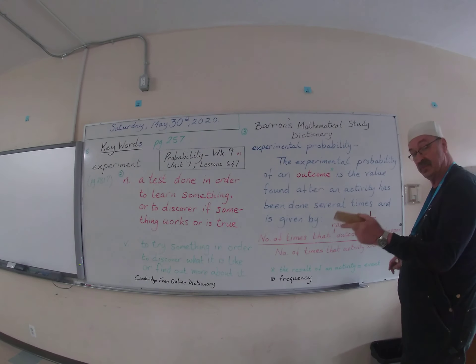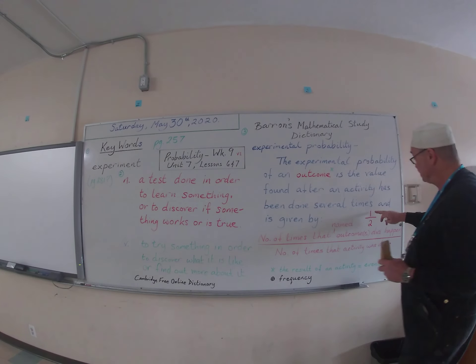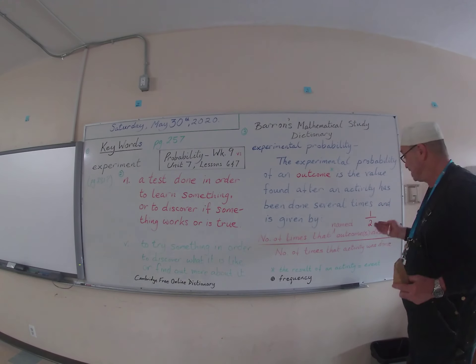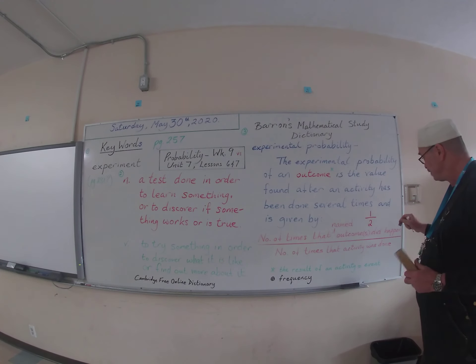So the number of trials, the number of times I did the experiment was two. And the number of times that the named outcome happened was one. So you can see that turns out to be a fraction, doesn't it? You could say half the time the named outcome happened. Or out of every two trials, one time the named outcome happened.